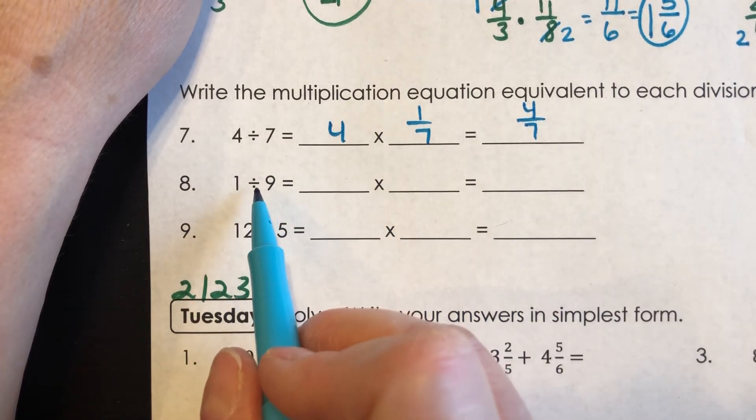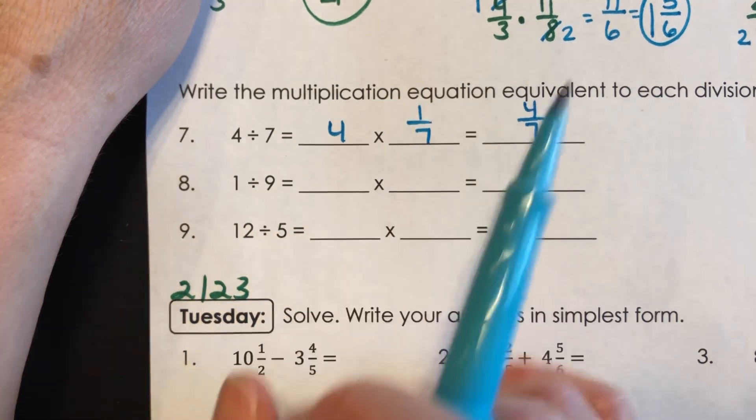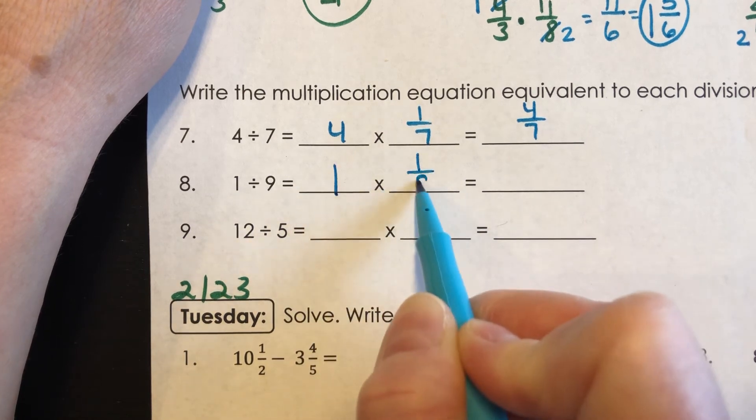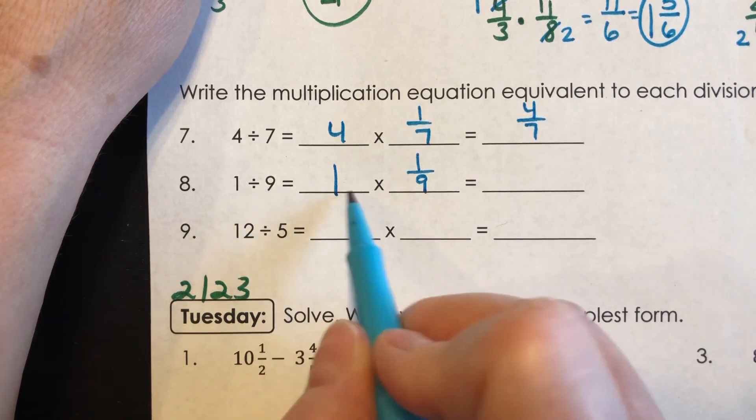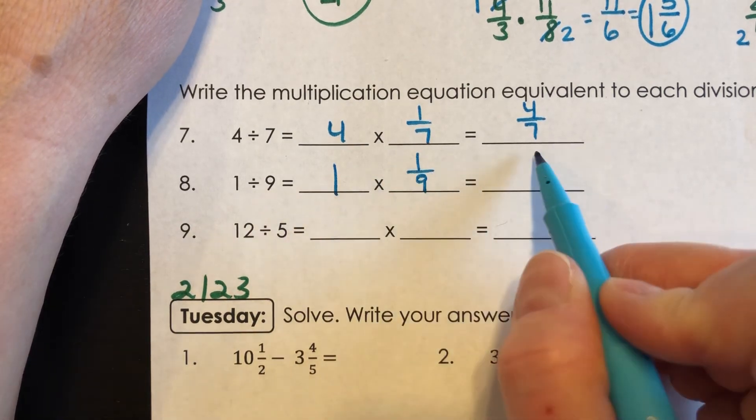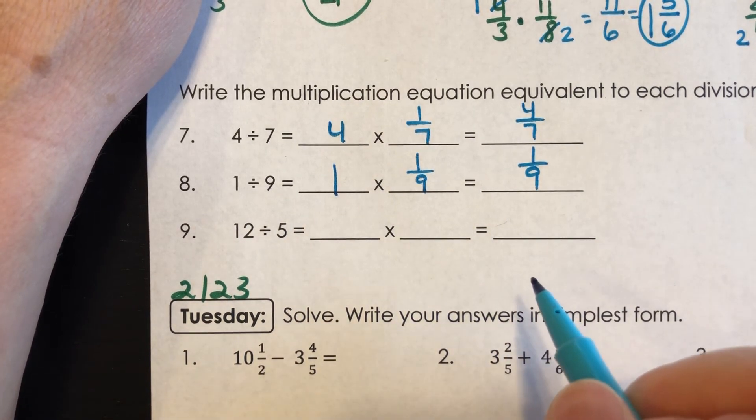For one divided by nine, it basically means you're taking one waffle, and you're cutting it up into nine pieces. So that means you'd have one-ninth one time. So one divided by nine is the same as one times one-ninth. And if you have one-ninth one times, you have one-ninth. Makes sense, doesn't it?